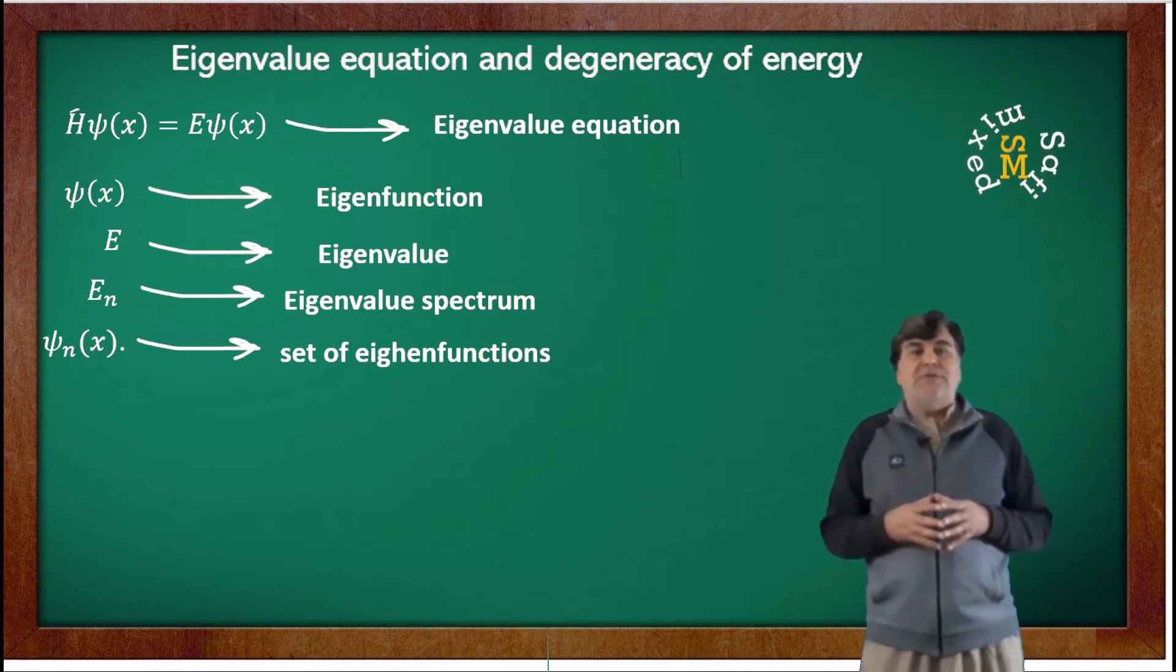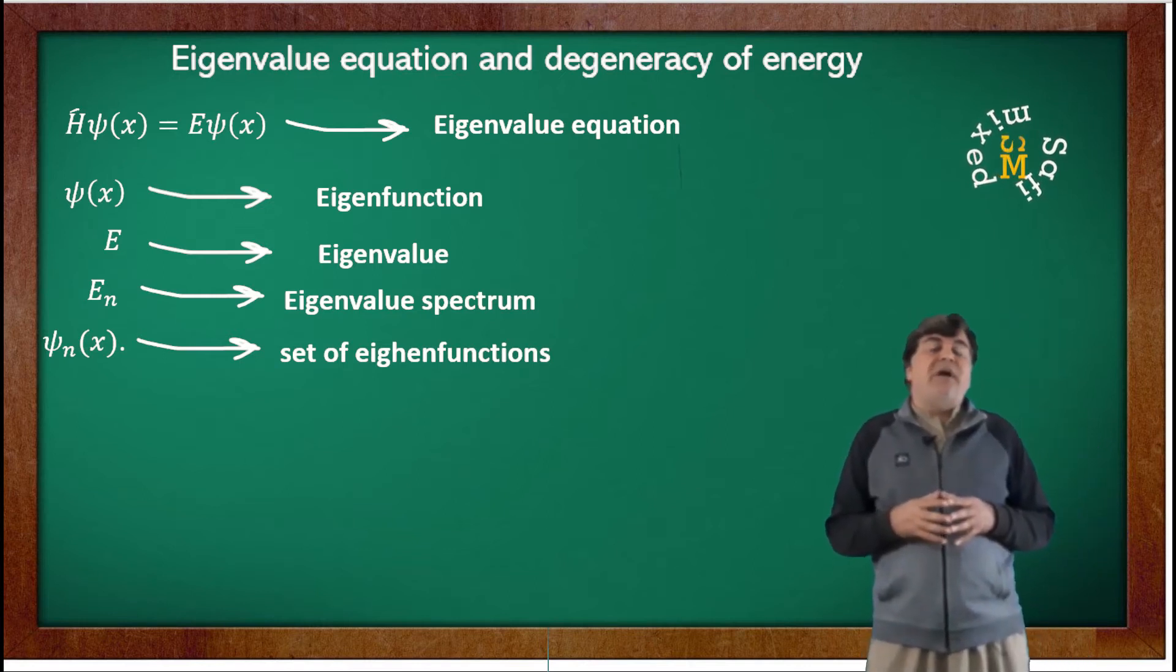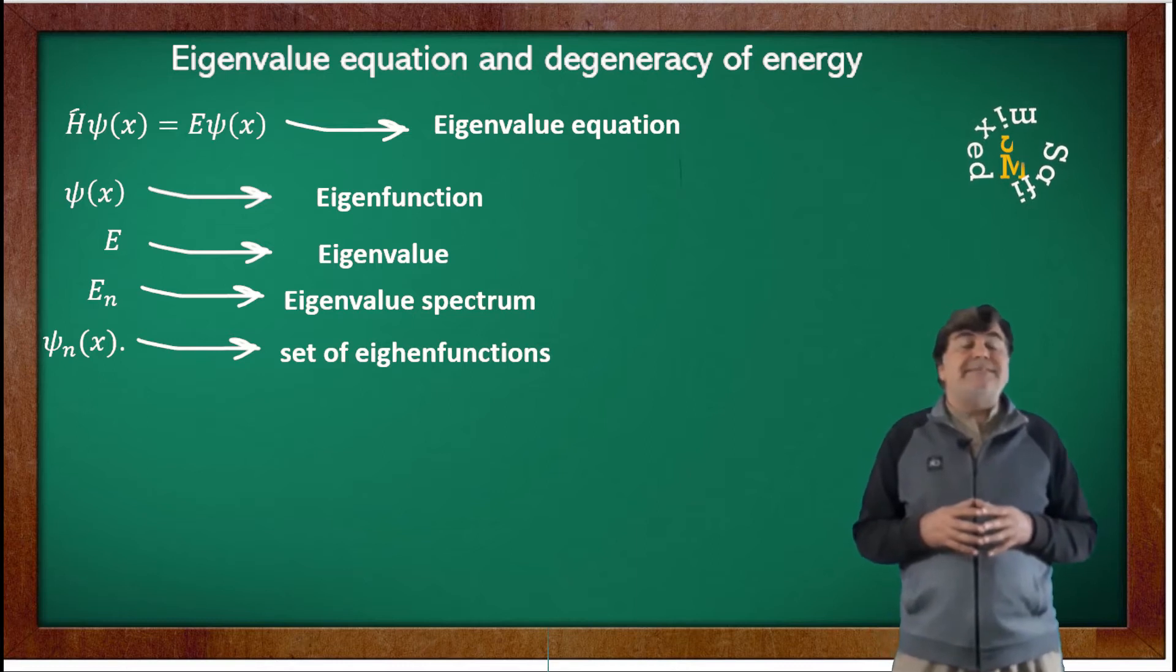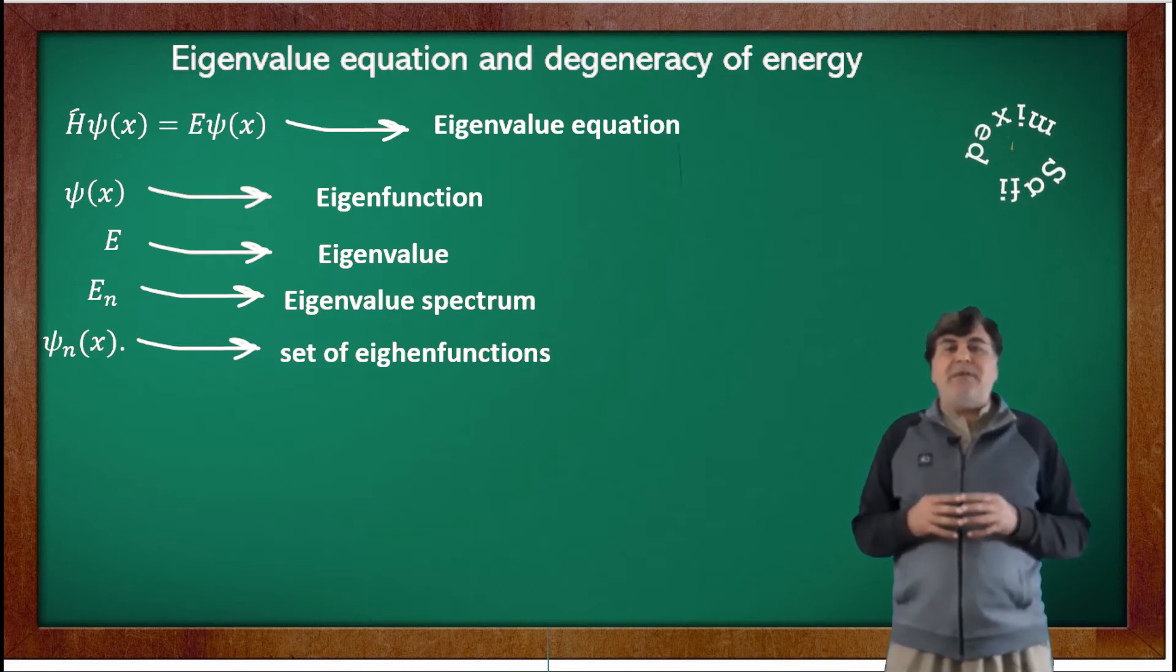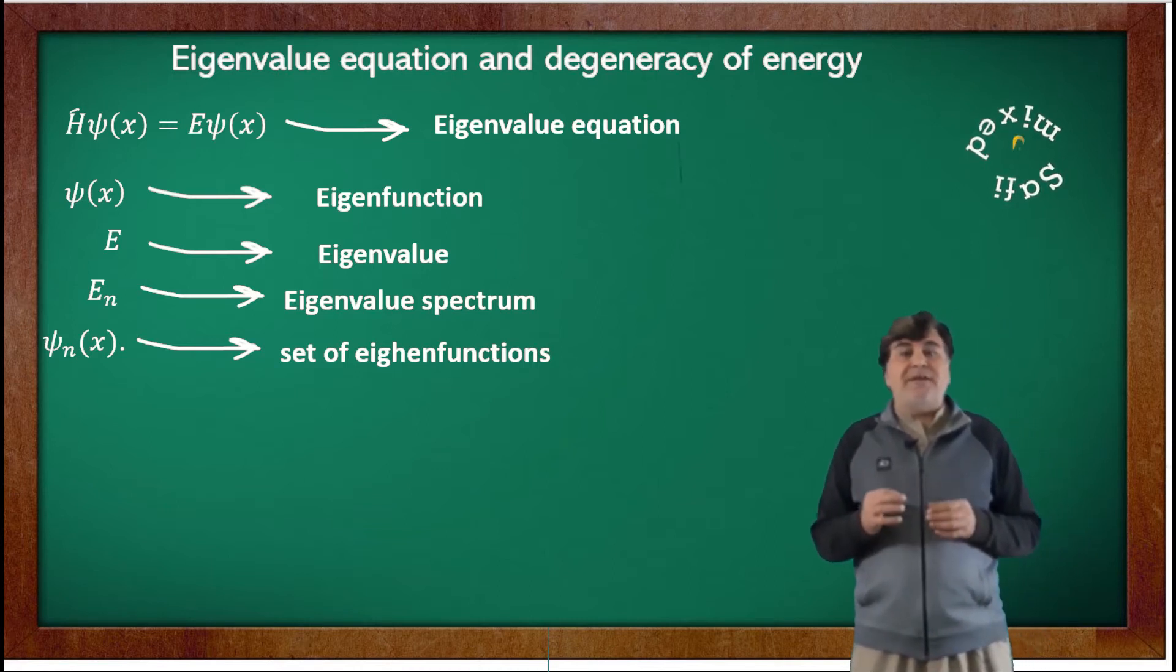Such an energy eigenvalue is called a degenerate eigenvalue. If there are n such linearly independent eigenfunctions sharing a single eigenvalue, the eigenvalue is then called n-fold degenerate.